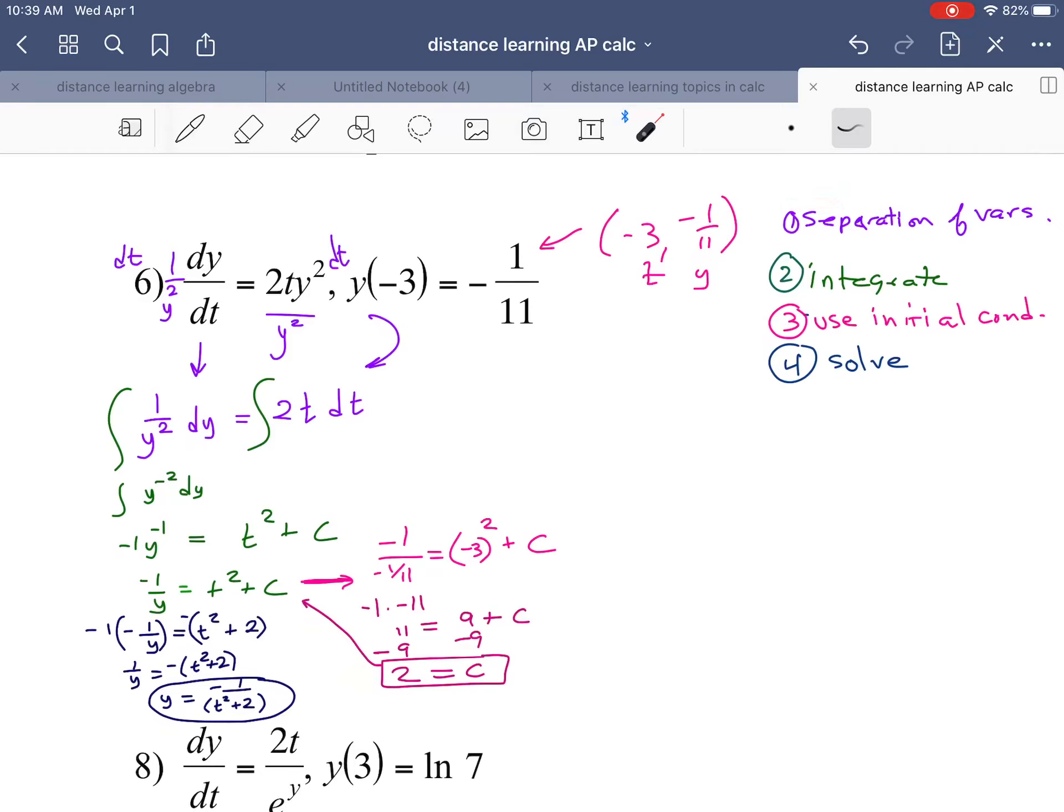I'm going to do separation of variables. In order to separate the variables, I'm going to put the Y's together on one side. To do that, I've divided this side by Y squared, which means I have to divide this side by Y squared. In this case, I've multiplied by 1 over Y squared, same thing.